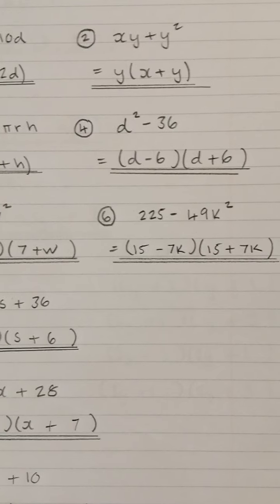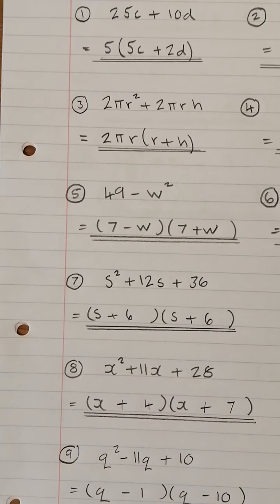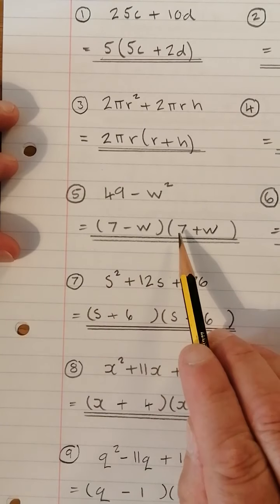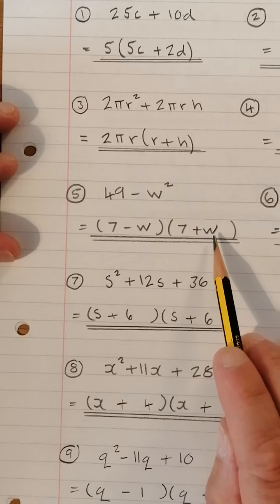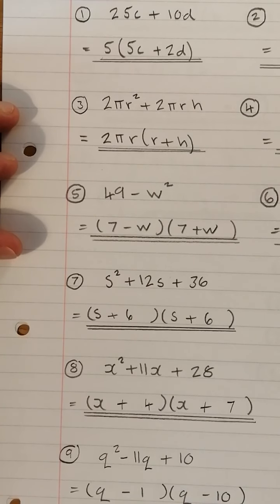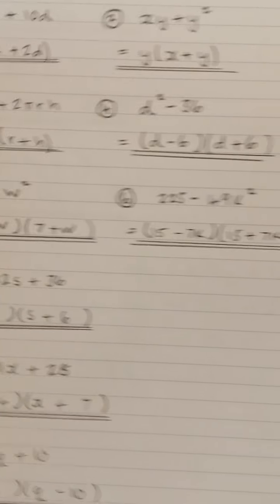Number 5, 49 - W². Similar to question 4. 7×7 gives 49, W times W gives W squared. One's a minus, one's a plus. Hopefully you're getting good at that now.